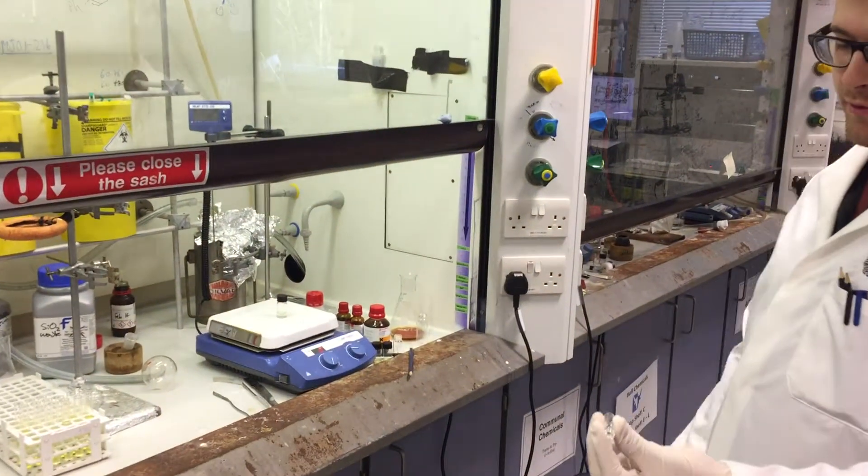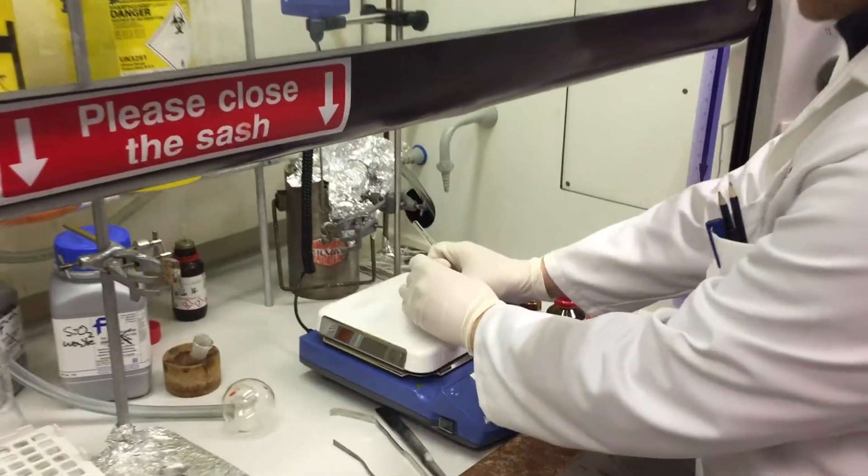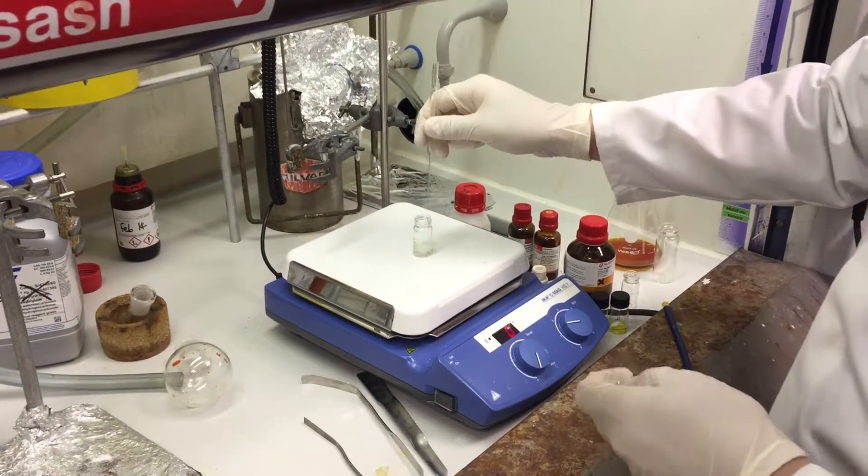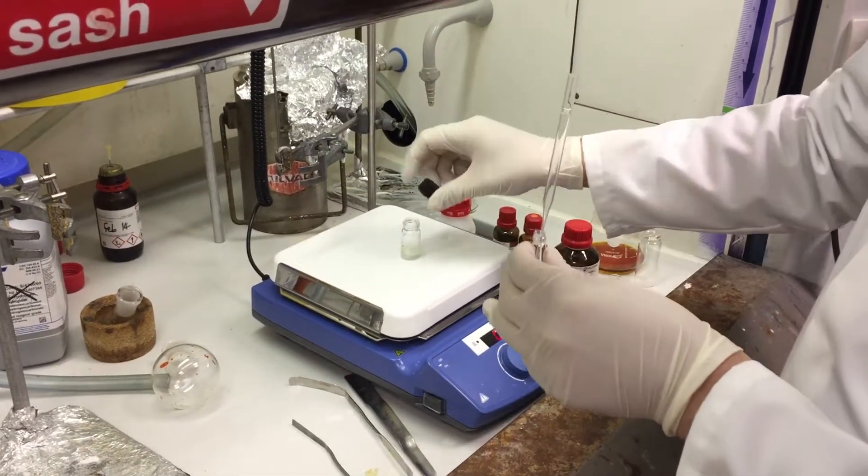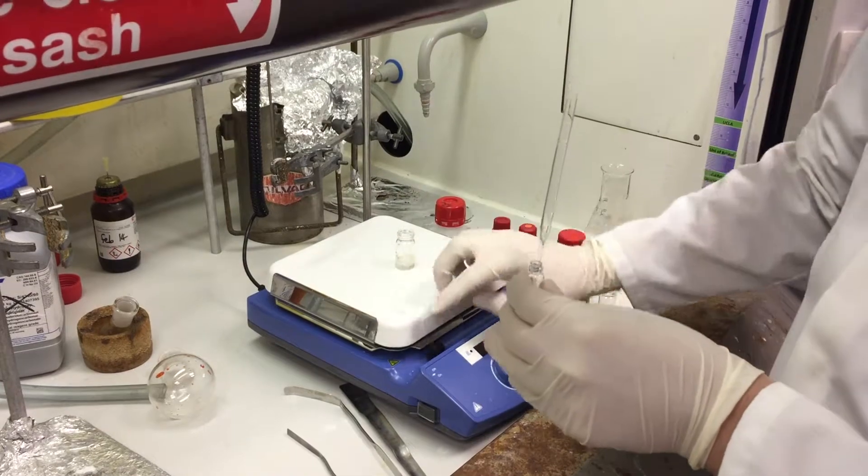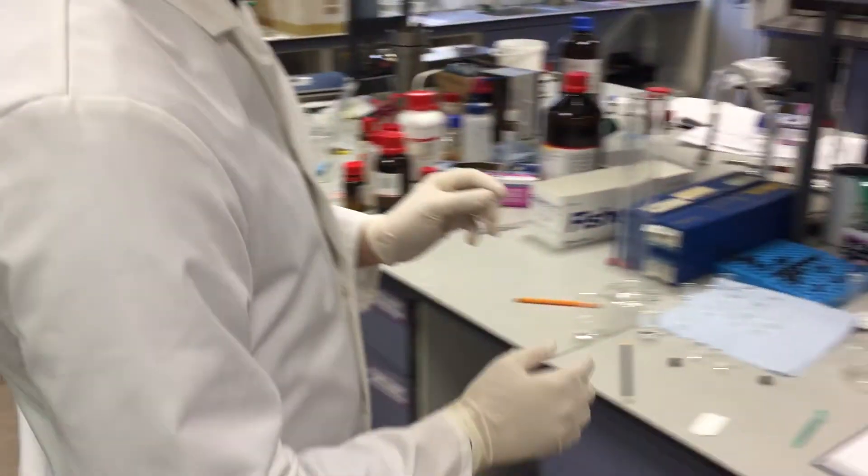So first thing you want to do is have a sample vial and a pipette. We'll collect a small aliquot of your reaction mixture. Just dip the pipette into the reaction, put it into your sample vial.